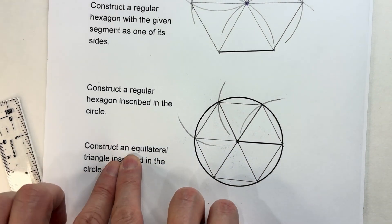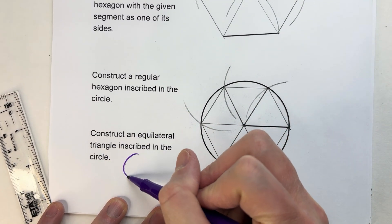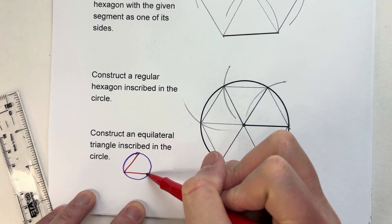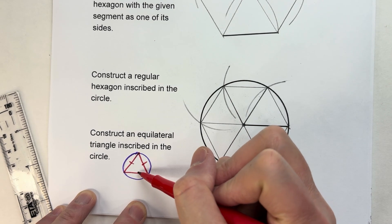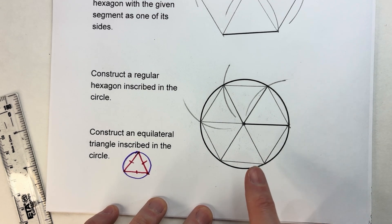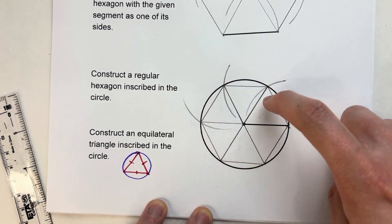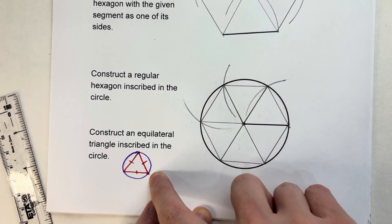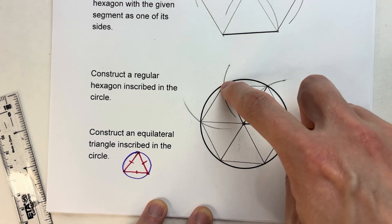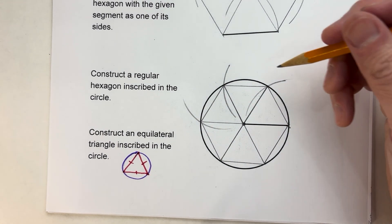Last thing we're going to do: construct an equilateral triangle inside of this circle. That equilateral triangle is going to fit exactly inside of the circle where each side is the same length and each corner touches the circle. The cool thing is we can use this diagram to do it because a hexagon has six corners, and an equilateral triangle only has three. So we could just connect every other point on the circle and it will automatically be an equilateral triangle.